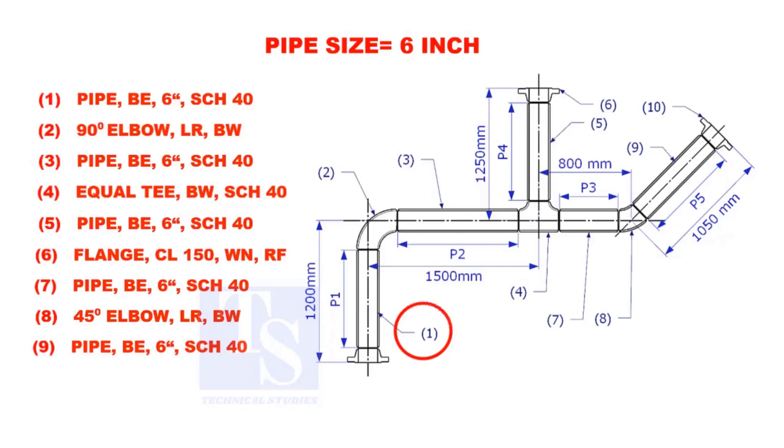Let us calculate the length of pipe 1. To calculate the length of pipe 1, we need to reduce the flange height and the elbow center from the measurement 1200mm.